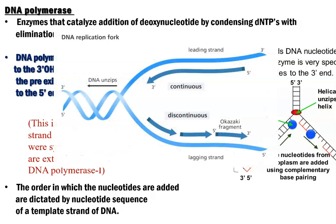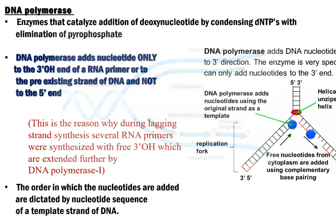This is the reason why one strand is synthesized very fast — that is called the leading strand — and there is another strand called the lagging strand that is also synthesized during DNA replication. While synthesizing the lagging strand, several RNA primers need to be synthesized with the help of the DNA primase enzyme.